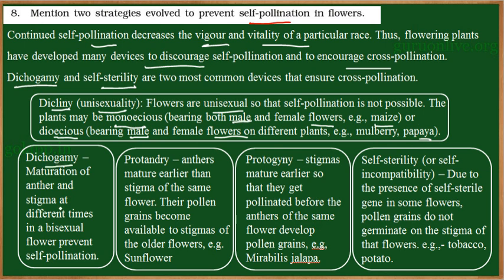The next outbreeding device is dichogamy. In dichogamy, the maturation of the anther and stigma occurs at different times. The flower is bisexual — it has both androecium and gynoecium — but both will not mature at the same time. The anthers may mature first compared to the stigma, or the stigma matures first compared to the anther. Since there is a difference in the maturation period, self-pollination will not be possible in the case of dichogamy.